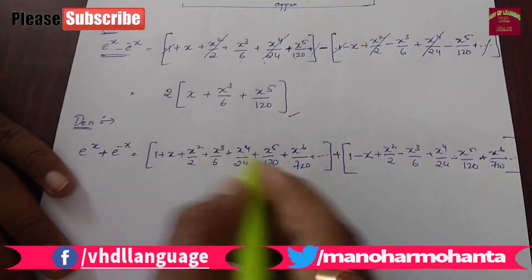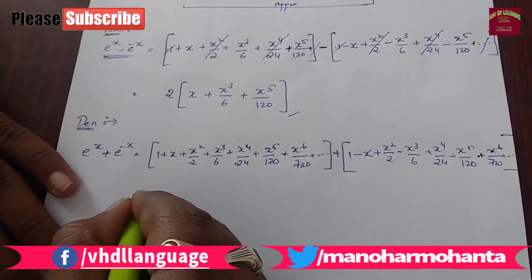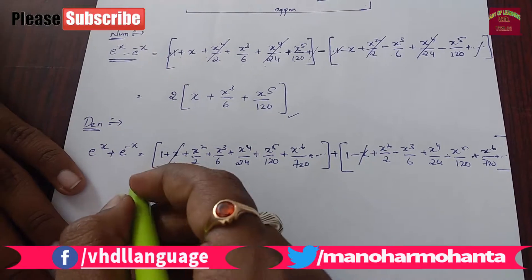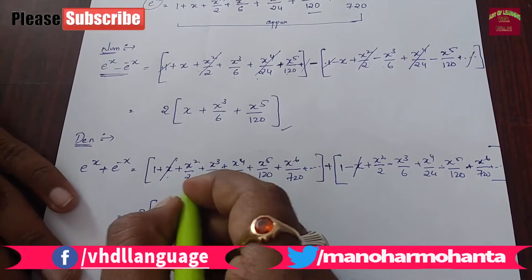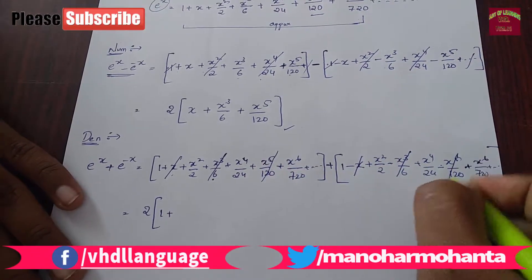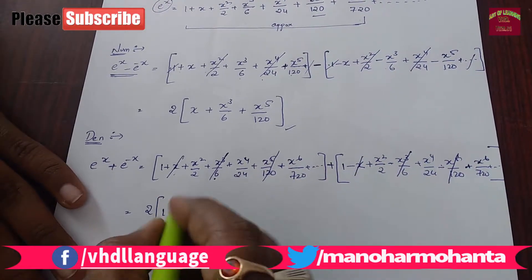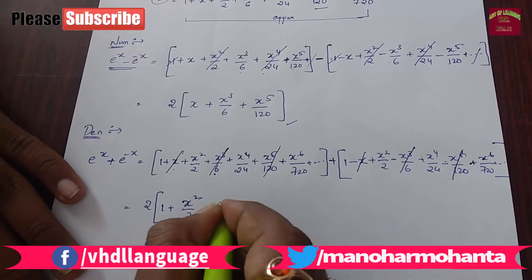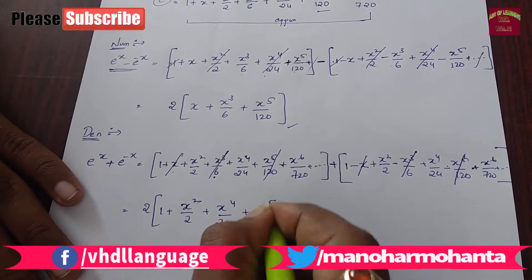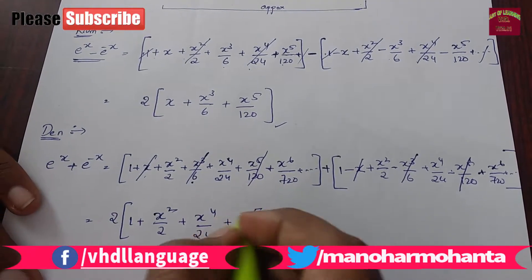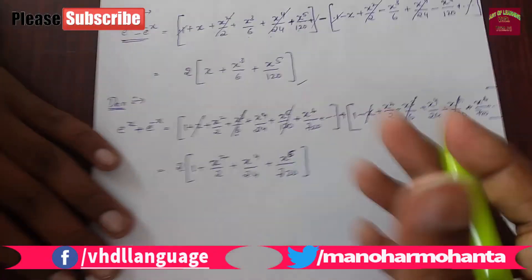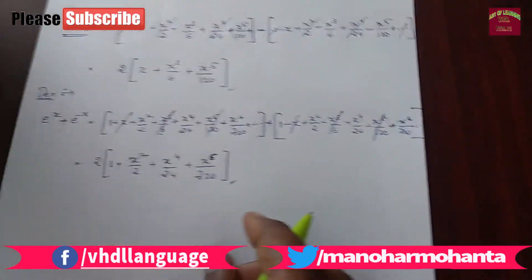You will be getting this. Since this is plus, you will be getting 2 of 1 plus — this plus and minus will be cancelled. Here you can see odd numbers will be getting cancelled. This is positive and this is positive: x square by 2 plus x square by 2 plus x power 4 by 24. X power 5 got cancelled. X power 6 by 720. You will be getting more values also, but that is not required.